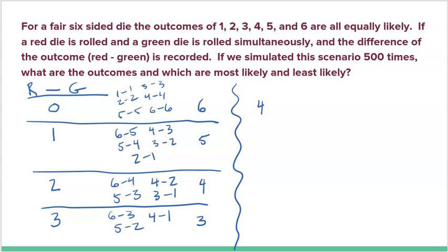Could the difference be four? That would have to be six minus two or five minus one — only two outcomes, since four minus zero is impossible on a die. Could the difference be five? Only six minus one gives a difference of five — just one way. Could the difference be six? No, because the only way would be six minus zero, and it's impossible to roll a zero.